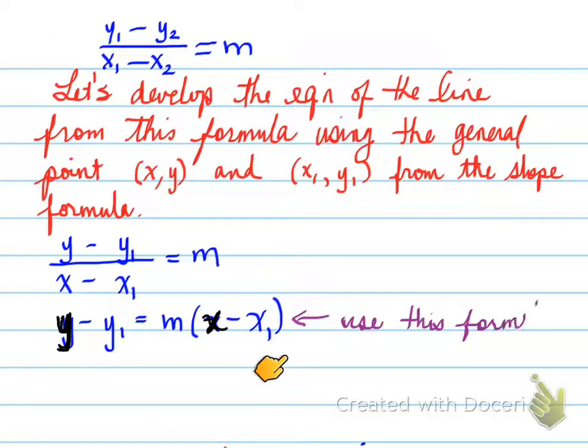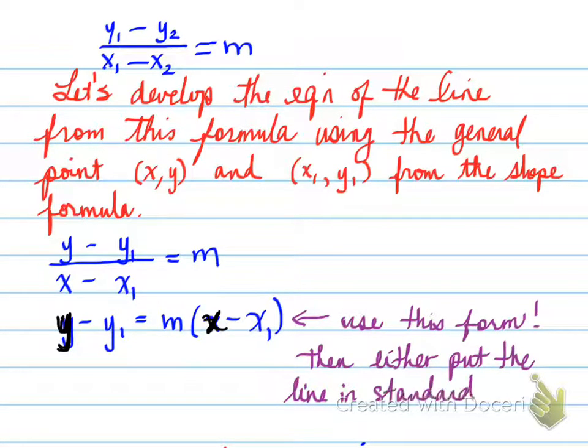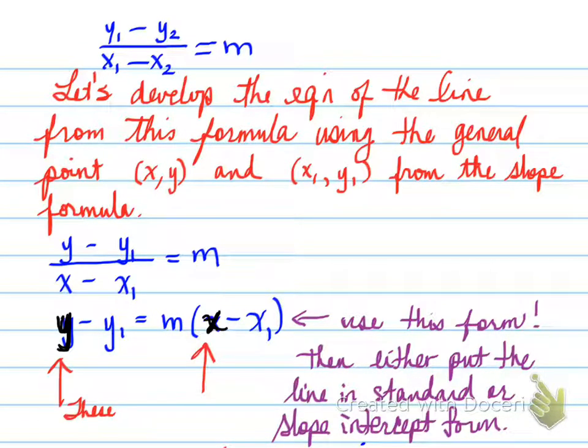And we're going to use this formula to find equations. So we're going to use this form. And then once we do that, we can either put the equation of the line in standard or in slope-intercept form. Slope-intercept turns out to be that y equals mx plus b form that some of you tend to like. Now, remember that the x and the y here that are black, these x and y, they remain as variables. They don't change because we need an x and a y in the equation to be able to determine any line that is not vertical or horizontal. All right. Next.